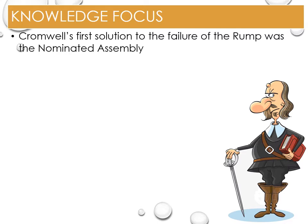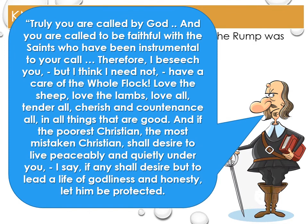Cromwell's first solution was the Nominated Assembly, consisting of 140 selected members chosen by Cromwell and the churches. It was supposed to act as if answering the call of God — an active godly reformation. In a speech at the opening of the Nominated Assembly, Cromwell addressed its members, demonstrating his attempt to meet his two aims of godly reformation and rule by Parliament.